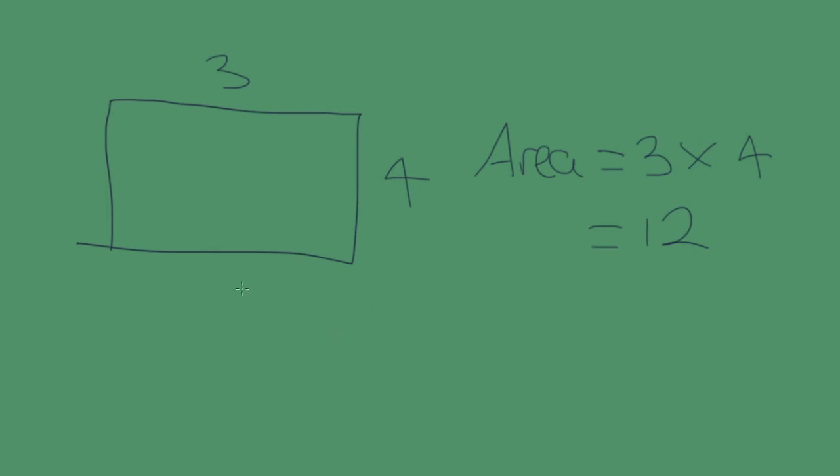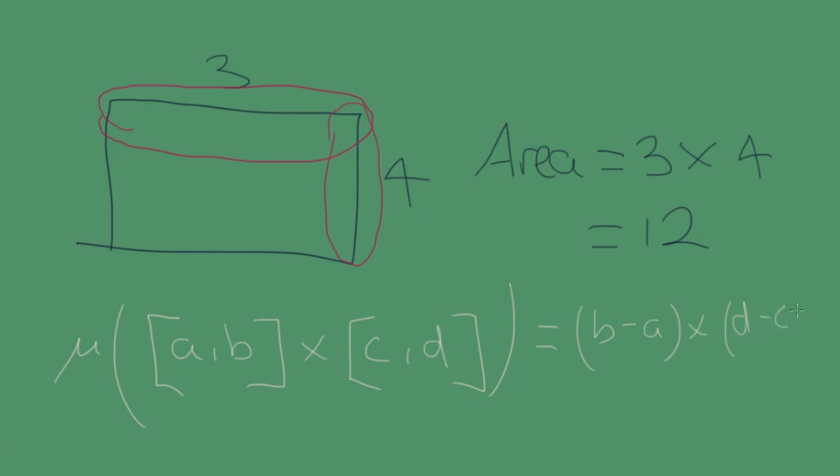Now going back to what we did before, well, we can think of, let me get a different color. So let's just call this as a set, right? We've just said this is the length. So why don't we just think of this is a set. And so let's call this a, b. And this, well, this is another set, right? Let's call that c, d. And what do we do then? So we just multiply them together, right? So the measure of this is just going to be b minus a, as before, the measure of that set, multiplied by the measure of the next set, just doing the same thing, the length of that times the length of that.